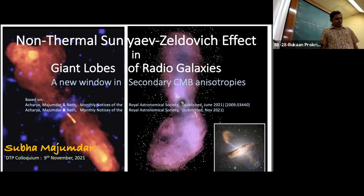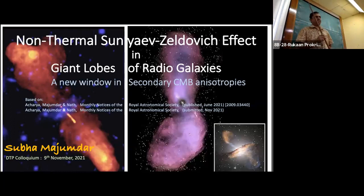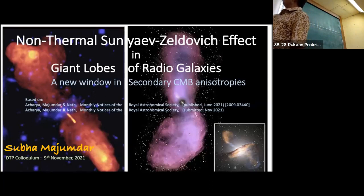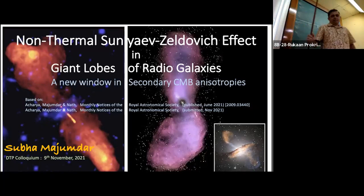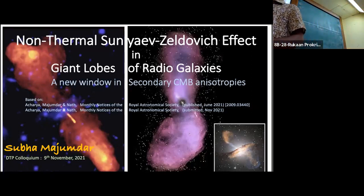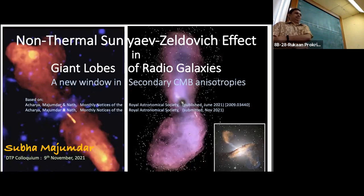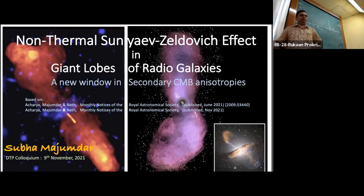This talk has a lot of things which I think would be interesting to students. Most of you will probably be seeing whatever is seen over here for the first time, because there haven't been many cosmology talks recently, and also nothing about secondary CMB anisotropies and isotopes. This was the last chapter of my thesis, which was 20 years back — about radio galaxies and CMB distortions.